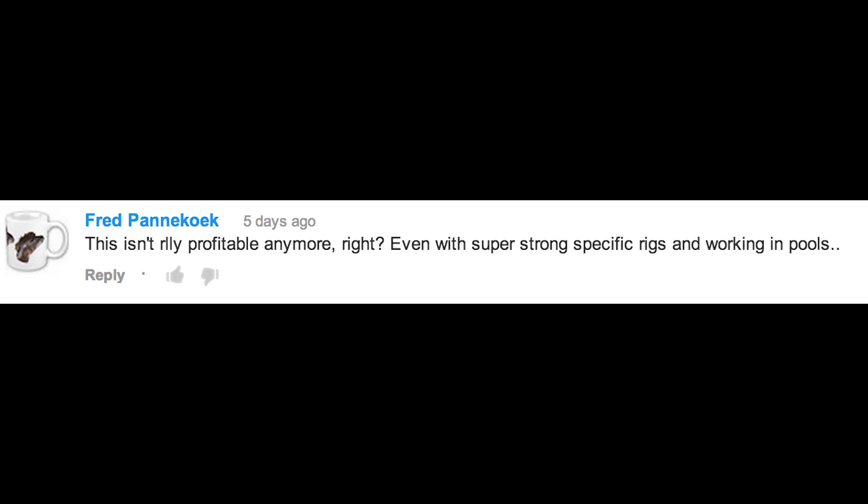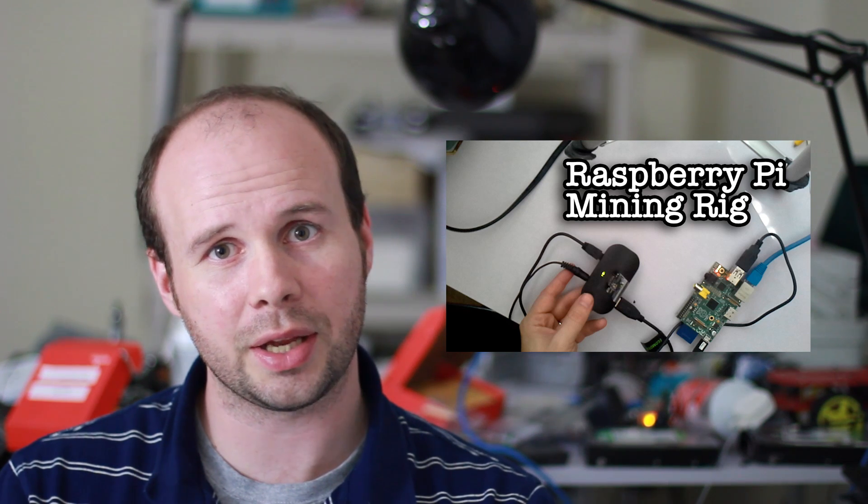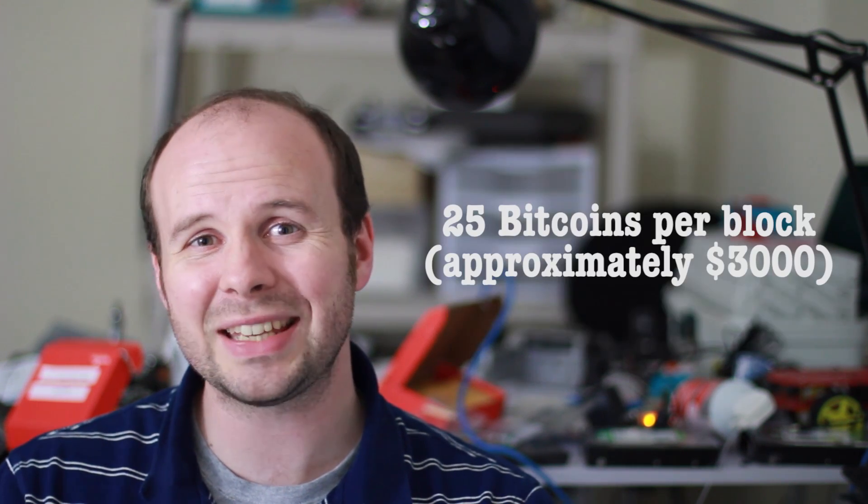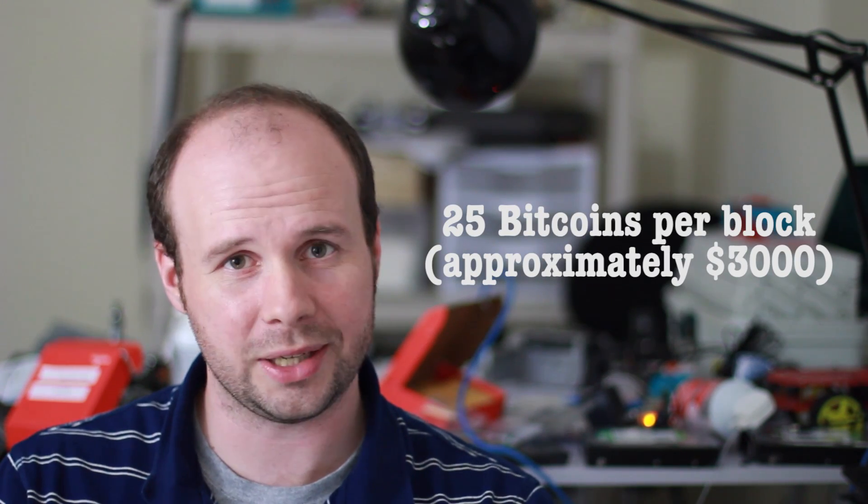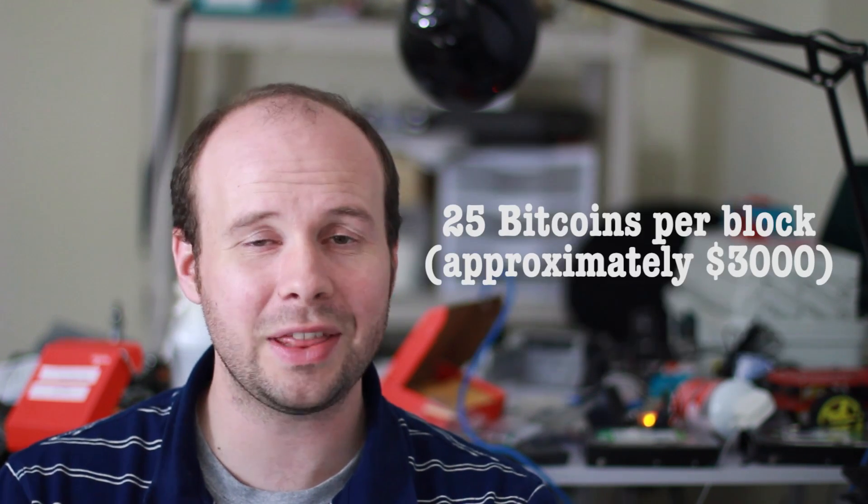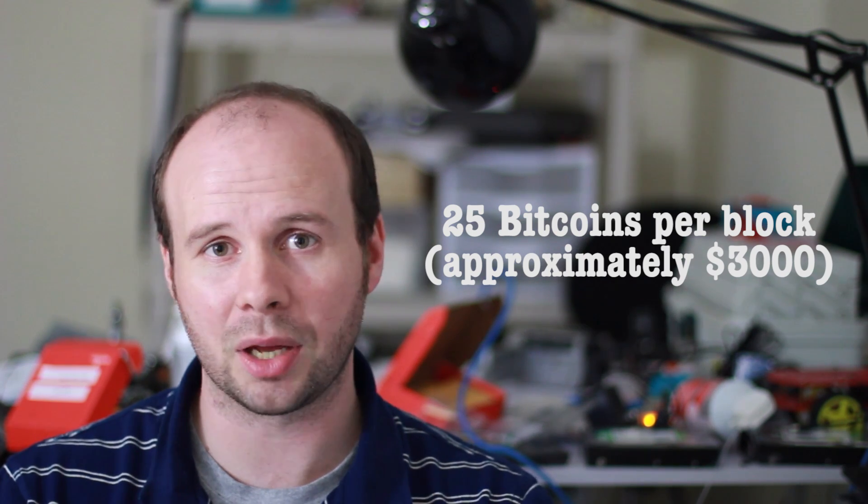This isn't really profitable anymore, right? Even with super strong specific rigs and working in pools. So here's the deal. I purchased a 330 megahertz Bitcoin miner for around $60. And I've hooked it up to my Raspberry Pi and it's been running for a couple weeks now. It's averaging 0.01 Bitcoins per week. Now with the cost of electricity and time, that rig is never going to be profitable. But if you were able to shell out the money for a multi-thousand dollar mining rig, you could mine your own Bitcoins a lot faster. And at roughly $3,000 per block, that rig could easily recoup its value and become profitable. You just have to shell out the money up front. And it's a lot of money.